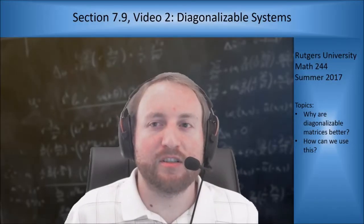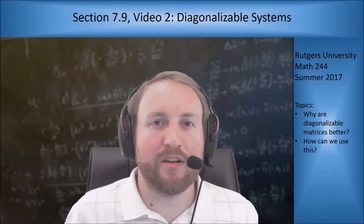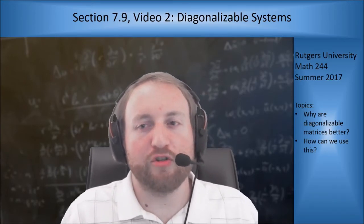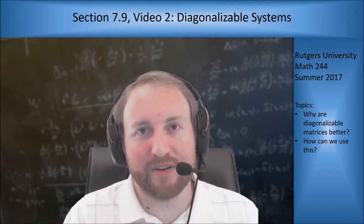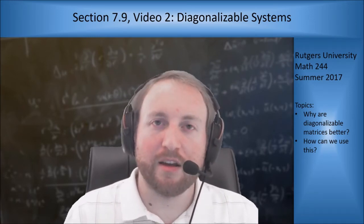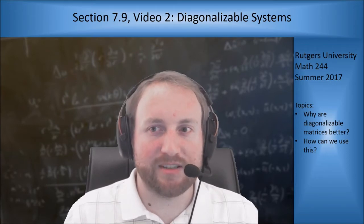Hey everyone, welcome to the second video of section 7.9. So we've started talking about non-homogeneous systems. Now we're going to talk about more general systems that are non-homogeneous and aren't just shifted by a constant vector, but something else that we can actually deal with. We're going to start by talking about diagonalizable systems.